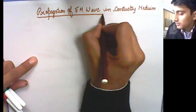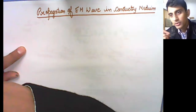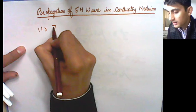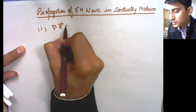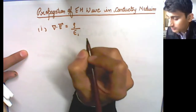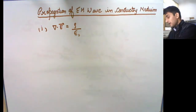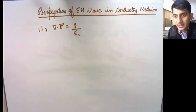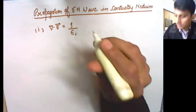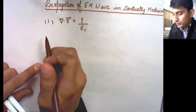Remember that the medium is not free space — it is a totally different medium, therefore Maxwell's equations will accordingly be modified. For example, the first Maxwell equation, divergence of E, which was rho divided by epsilon naught, will now be rho divided by epsilon, because the permittivity of the conducting medium is different and will definitely differ from the permittivity of free space.